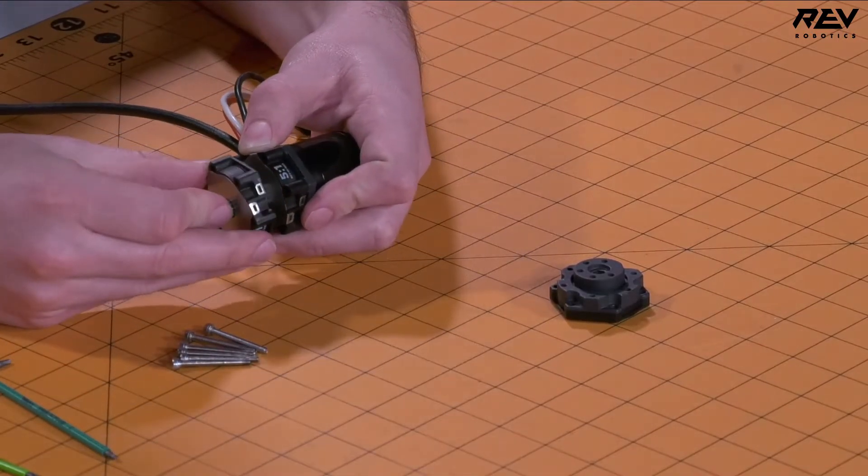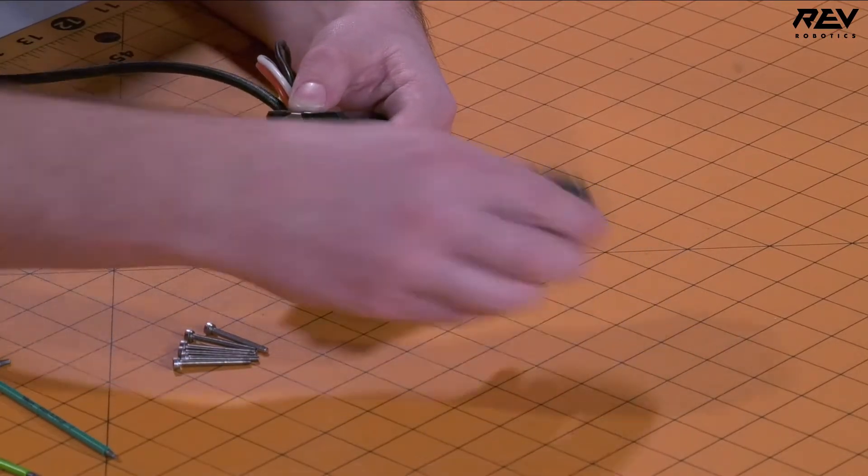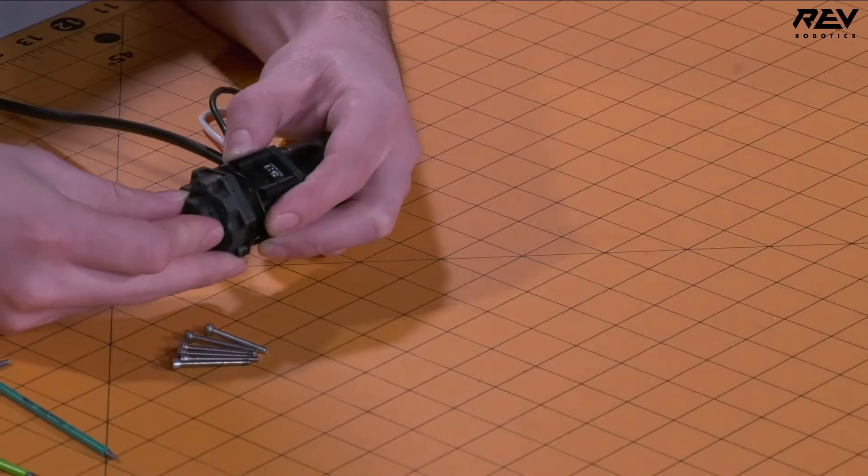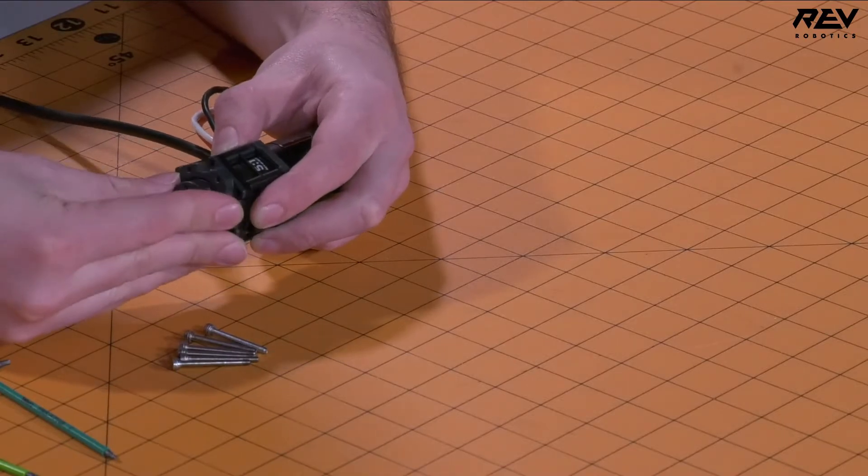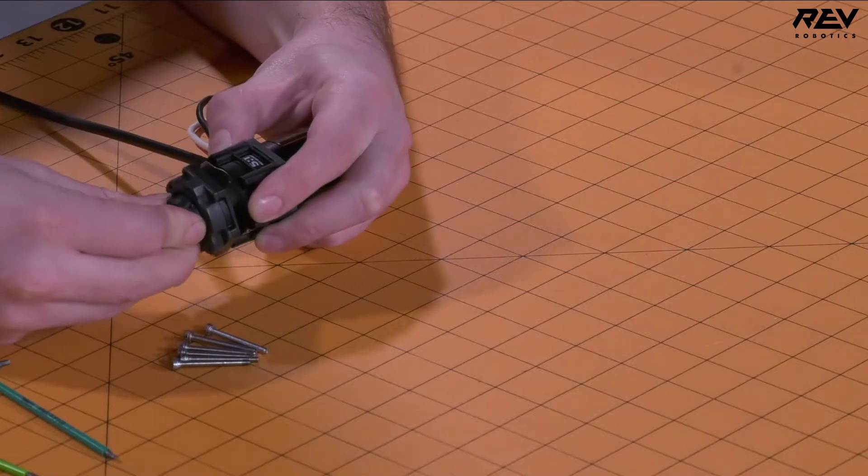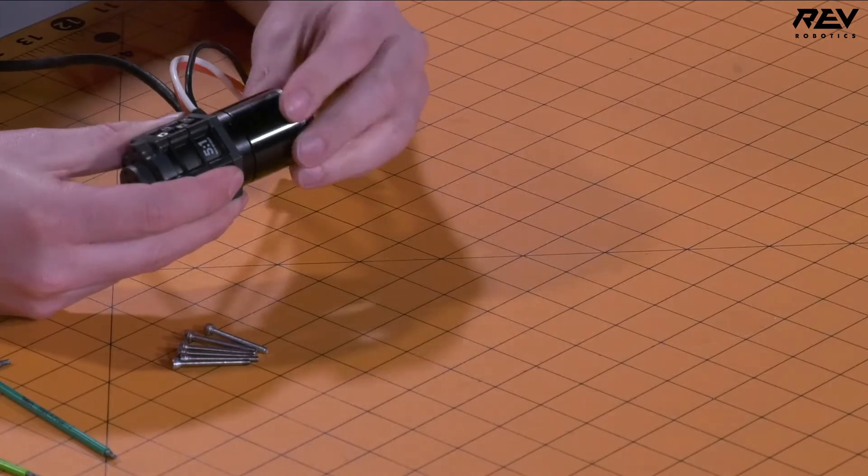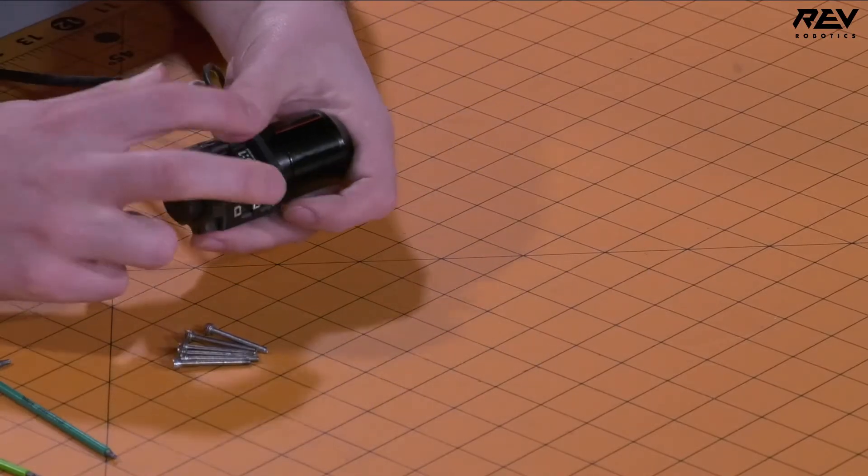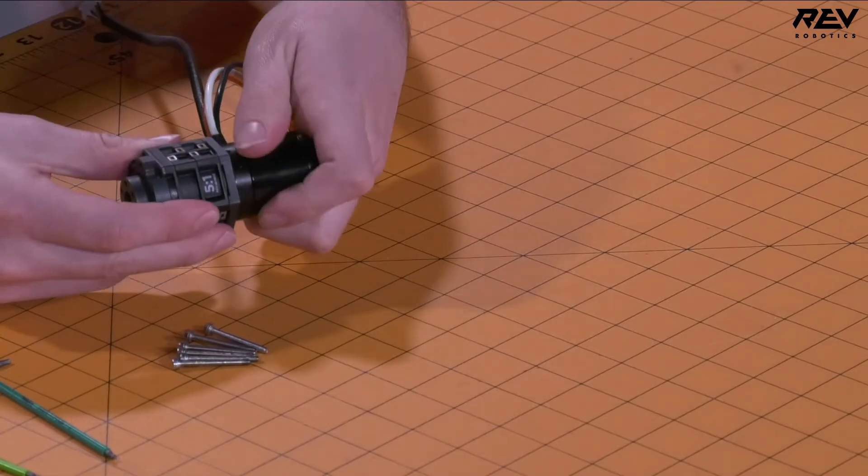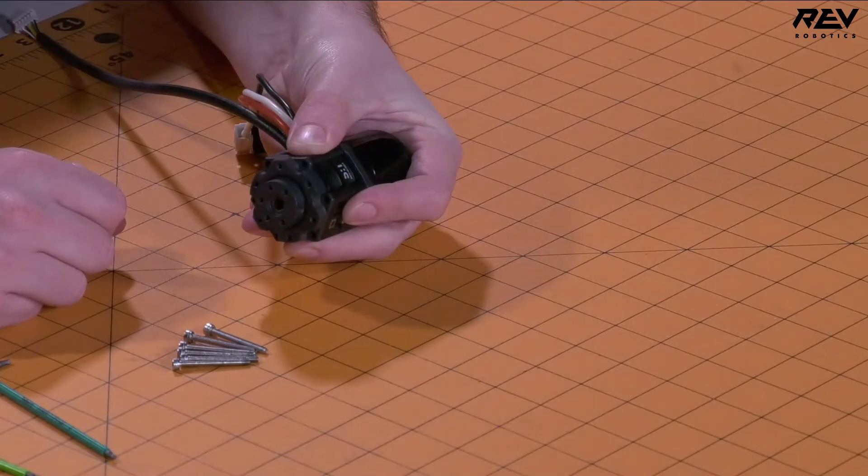You can then do the same thing with your next cartridge in the reduction, and it goes on like that, and then you'll follow that up with the output. One thing that's particularly handy when doing this is keeping your hand around the NEO 550, because this back bell will also help to spin the output shaft, which then will spin the rest of the cartridges down the line. So if you hold this in place, it makes it easier to stack your ultraplanetary cartridges as you're going.